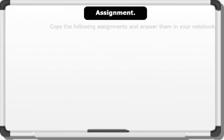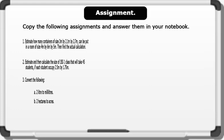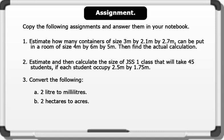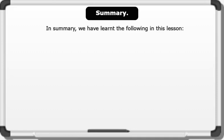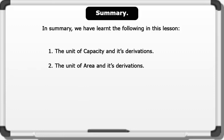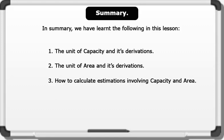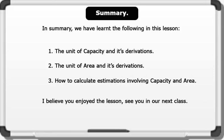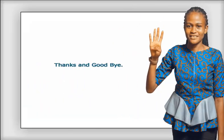Assignment. Pause the video, copy the following assignments, and write the answers in your notebook. In summary, we have learned the following in this lesson: 1. The unit of capacity and its derivations. 2. The unit of area and its derivations. 3. How to calculate estimations involving capacity and area. I believe you enjoyed this lesson — see you in our next one. Thanks and goodbye.